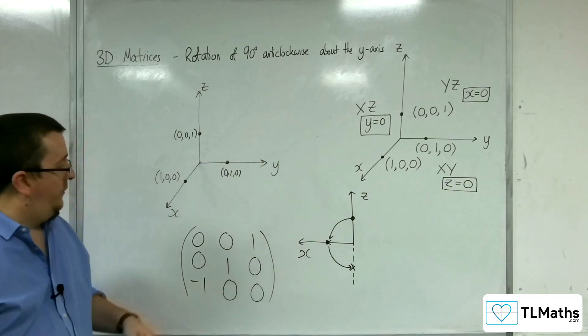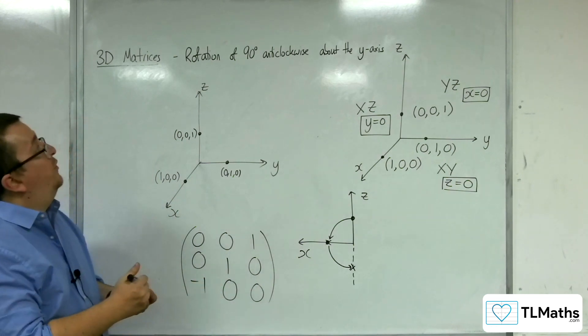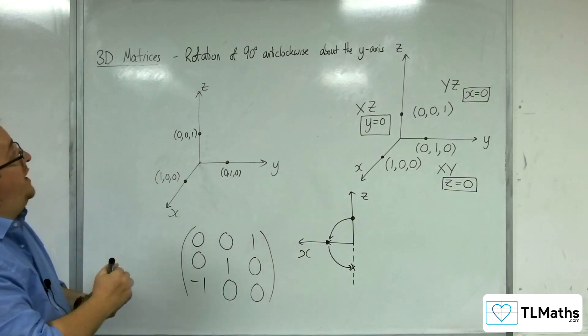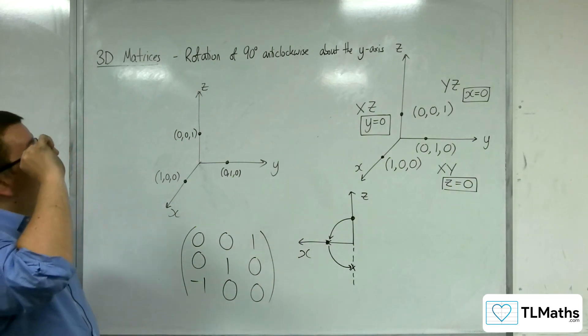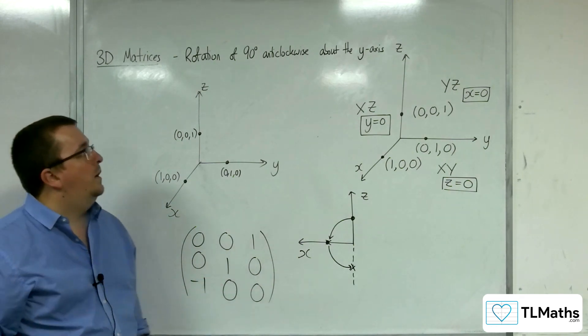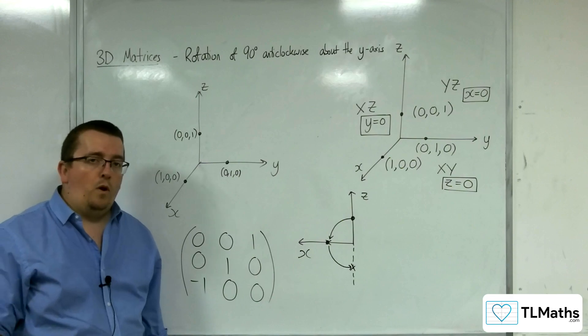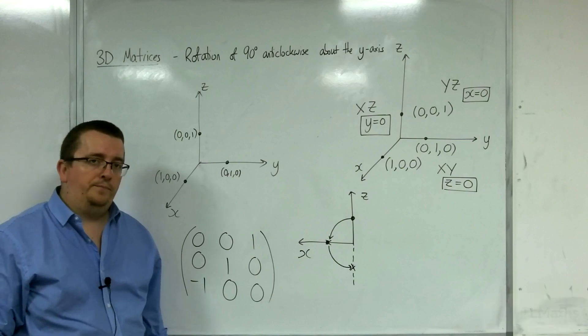And so, this is the matrix that represents a rotation of 90 degrees anticlockwise about the y-axis.